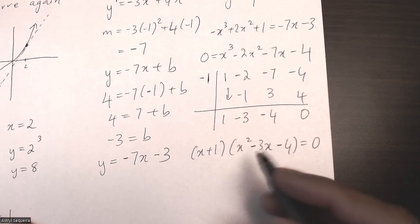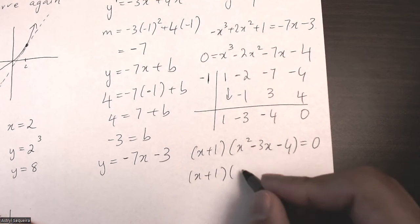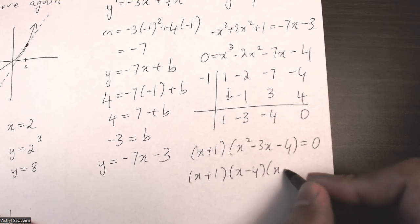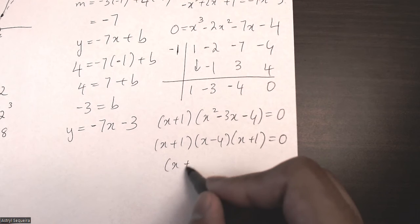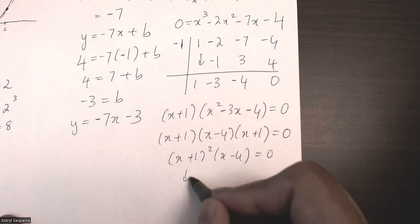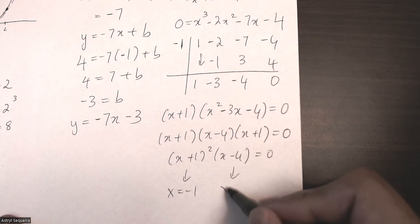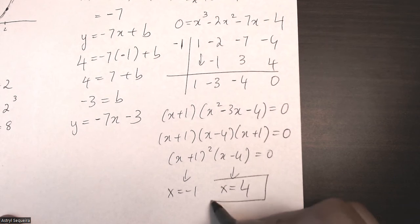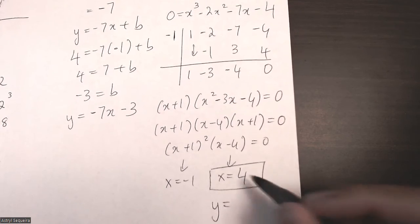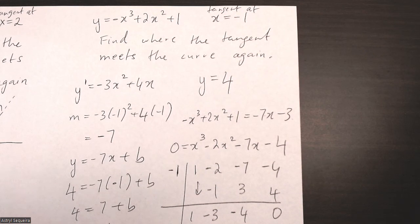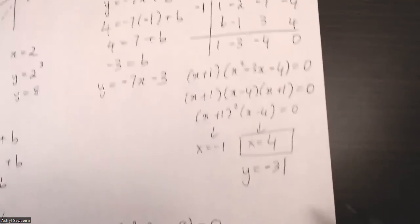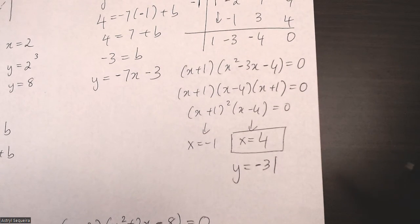Factoring x squared minus 3x minus 4 gives x minus 4 times x plus 1, so the full expression is x plus 1 squared times x minus 4 equals zero. The solution x equals negative 1 is already given in the question, so the new intersection is at x equals 4. Substituting back into the original equation gives y equals negative 31. The other point where the graph intersects is at coordinates 4, negative 31.